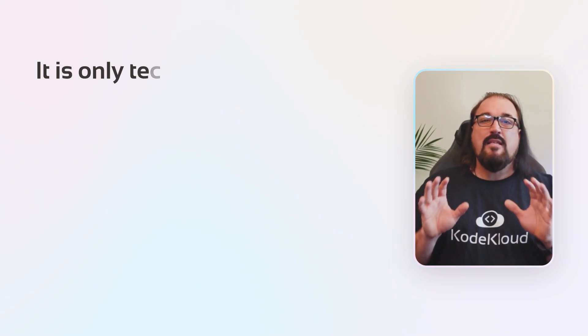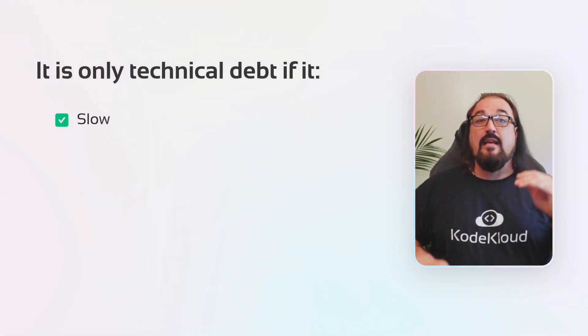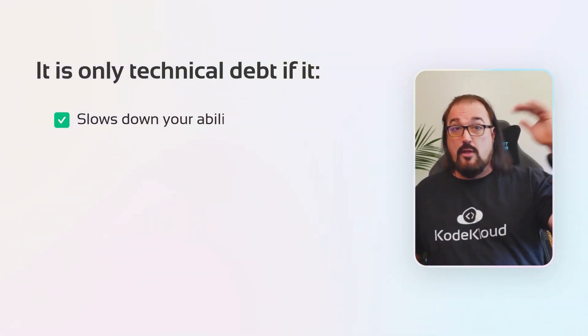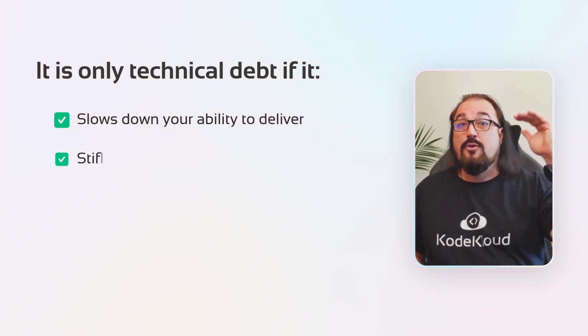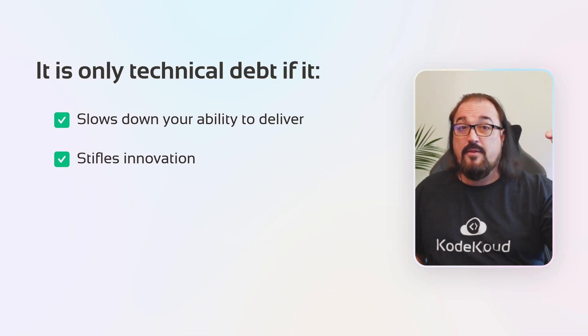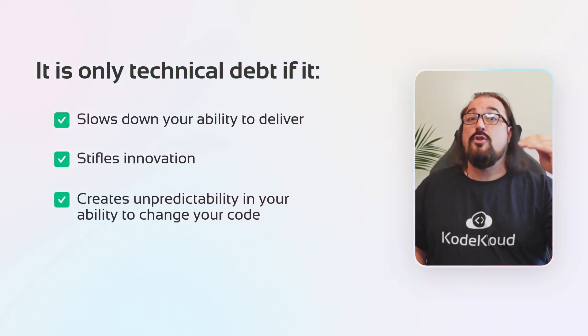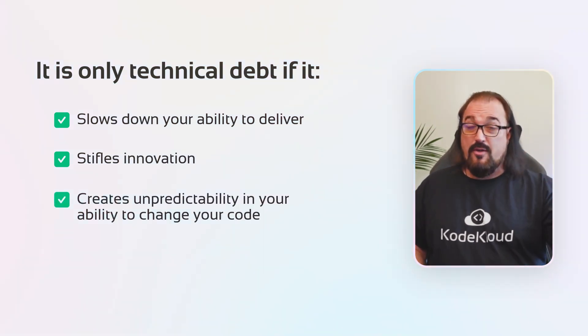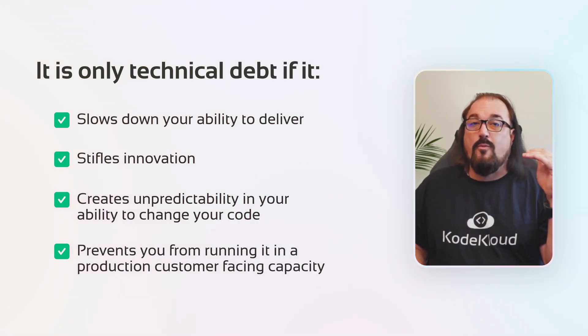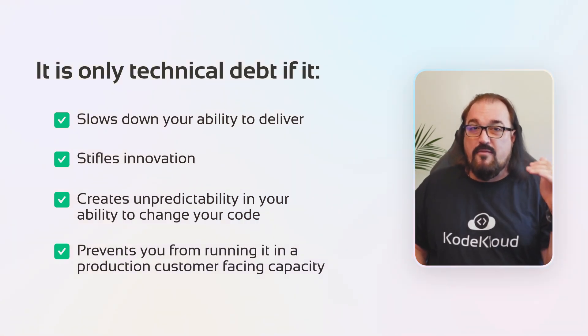To put this in the positive: technical debt is only present if you're seeing a slowdown in your ability to deliver, stifled innovation, unpredictability in your ability to change the code, or something that prevents you from running it in a production-facing capacity. Otherwise, it's a design choice — you can just ignore it. It's just tech debt sitting in the corner.